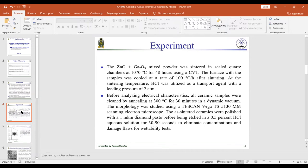The morphology was studied using a scanning electron microscope, whereas sintered ceramics were polished with one micrometer diamond paste before being etched in 0.5 percent hydrogen chloride aqueous solution for 30 to 90 seconds to eliminate contamination under damaging flows for wettability tests.